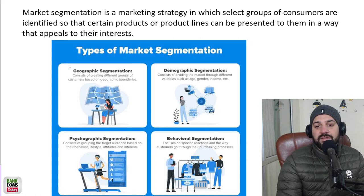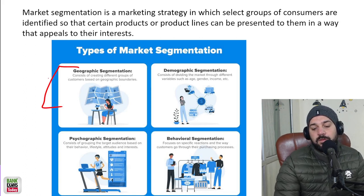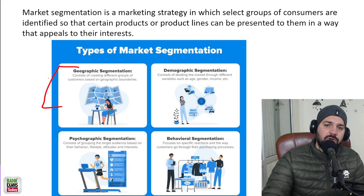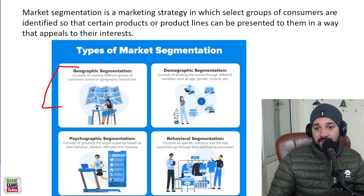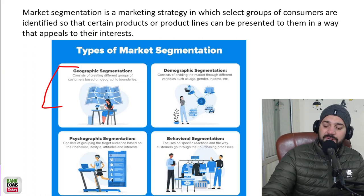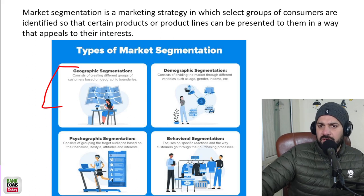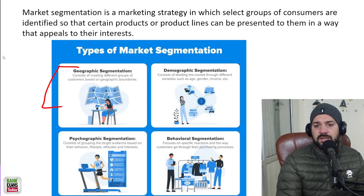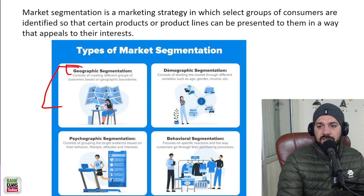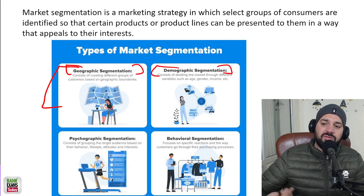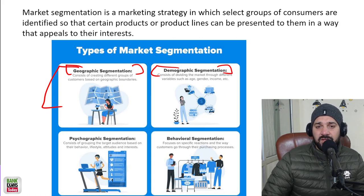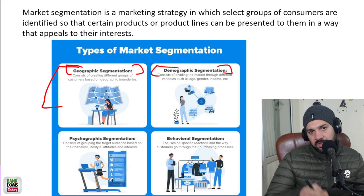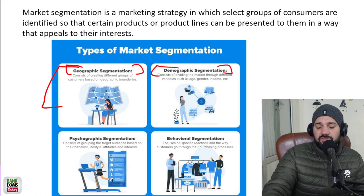Geographic segmentation means dividing the whole market according to geography — for example, Ludhiana, the state of Punjab, or India as a country — according to city, state, or nation. Demographic segmentation is according to demography — factors such as gender, age, marital status, or income. According to these factors, the whole population is divided into segments.